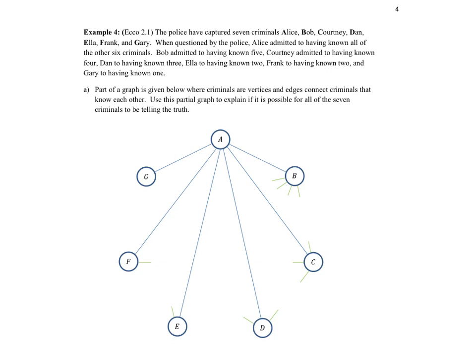We're going to try to use this partial graph to discover if it's possible for all seven of the criminals to be telling the truth. We've made some of the connections. A said I know all of these people, so we connected all of the possibilities to A. And then B said five. We don't know who B knows. We know that B knows A, but we don't know which other criminal is not known by B. The same with C. We drew some spokes coming out of there. We meant to connect those, but we don't know where exactly to connect them.